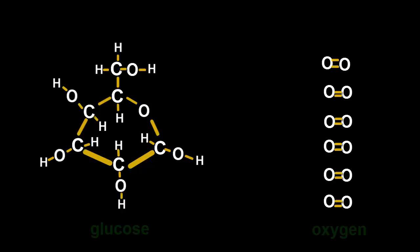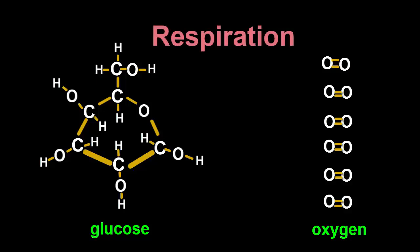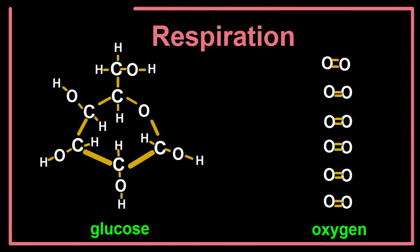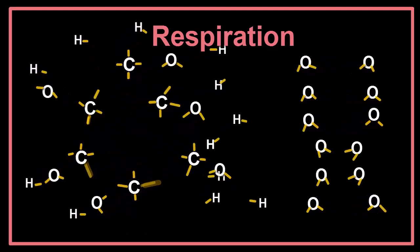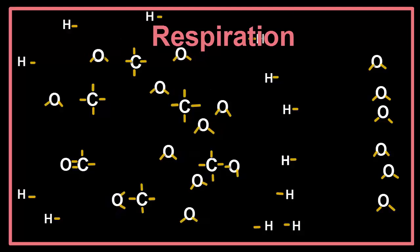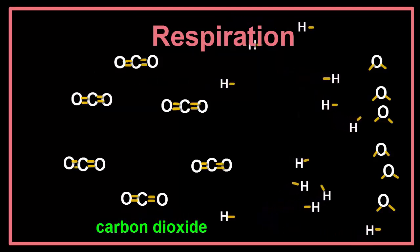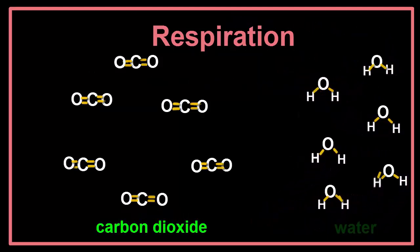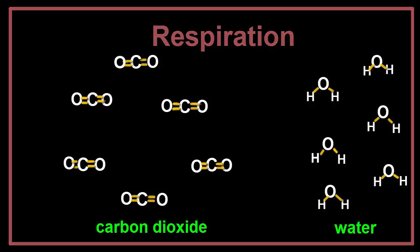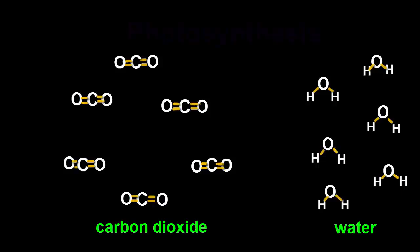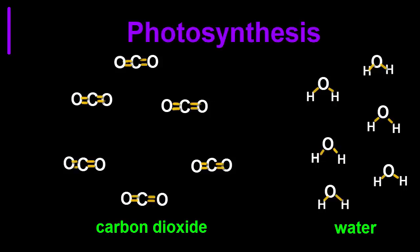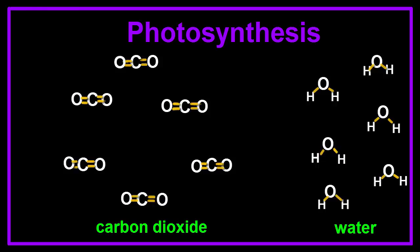Another way to see that photosynthesis and respiration go hand in hand is to show the two reactions using their structural formulas. Respiration starts with glucose and oxygen and produces carbon dioxide and water. In contrast, photosynthesis starts with carbon dioxide and water and produces glucose and oxygen.